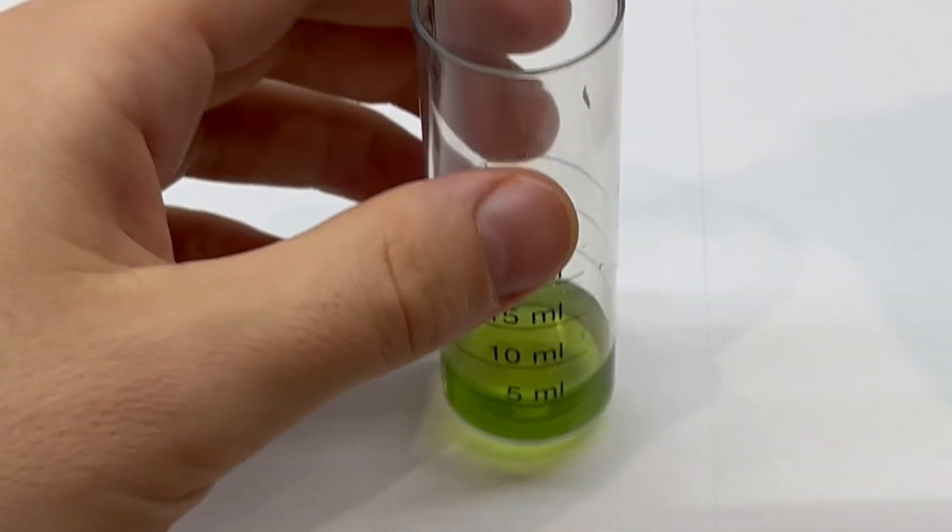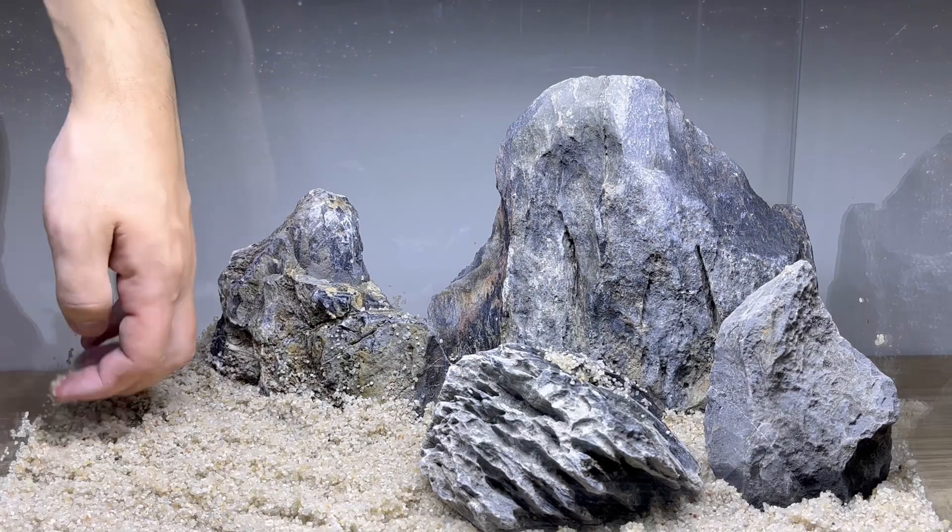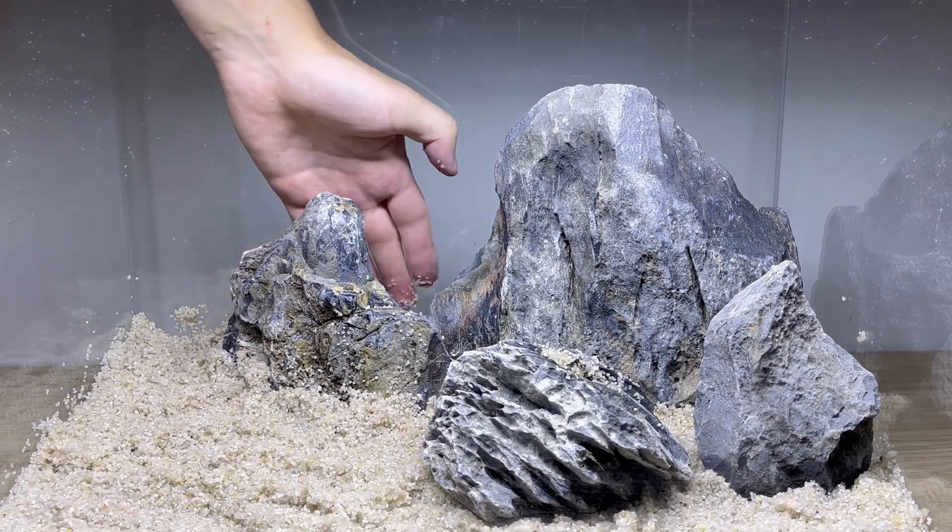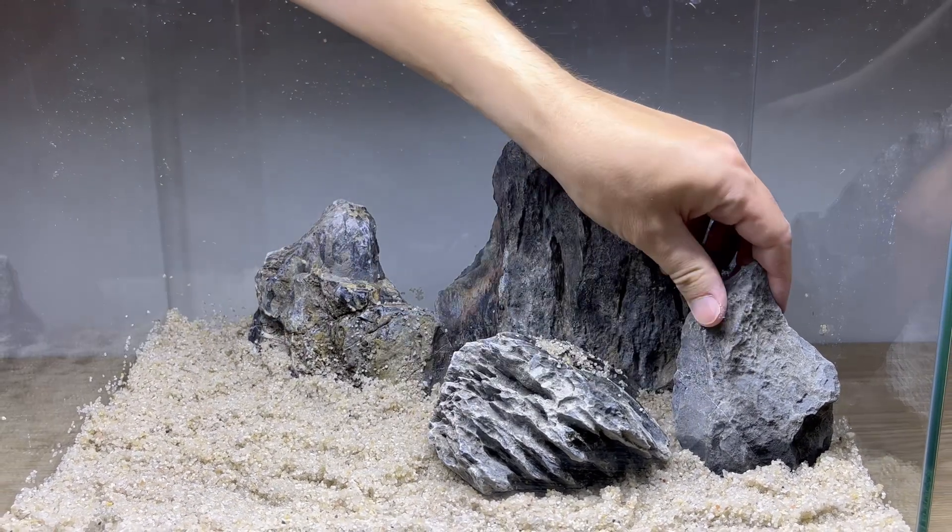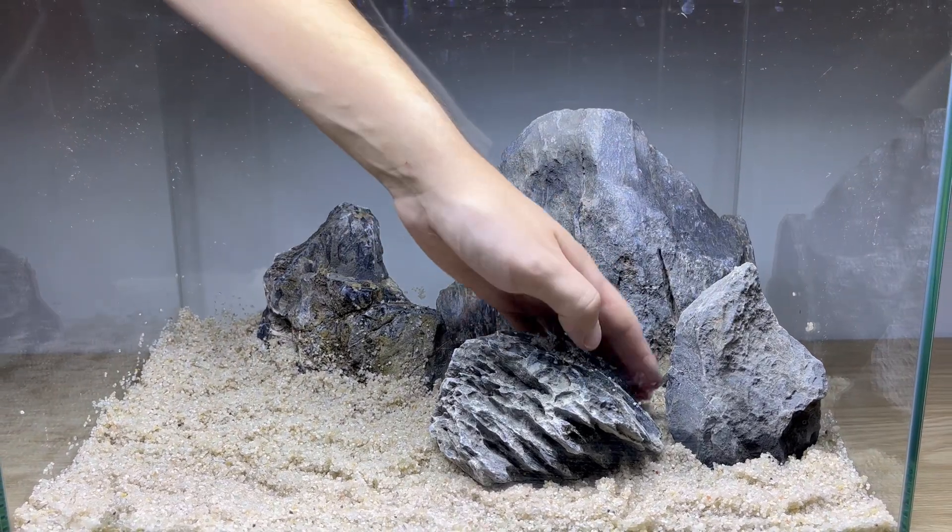And if you want to increase the GH levels in your tank, you can use some rocks that are very rich in calcium, magnesium or both.